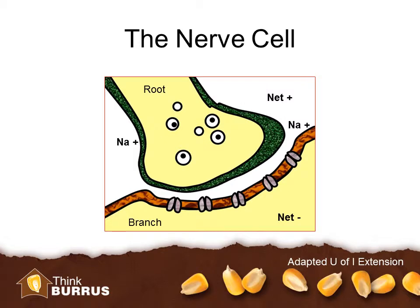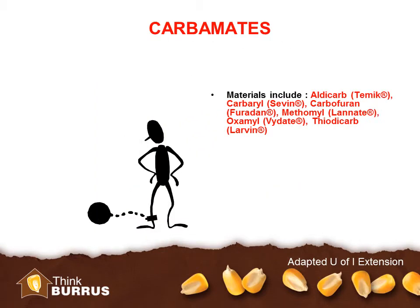The neuron released an enzyme, the enzyme chewed up that key, the doors closed, the signal stopped firing, and everything went back to the way it was before. So there are two groups of insecticides — two mode-of-action families — that mess up this process of chewing up the key and closing the door. They bind to the enzyme that chews up the keys. The two families are the carbamates and the organophosphates.